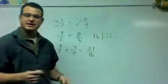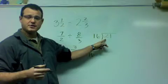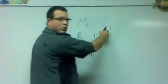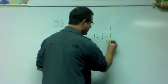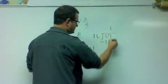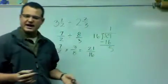21 divided by 16. Now, 16 does not fit into 2. It fits into 21 one time. 1 times 16, 16. And I do my subtraction.